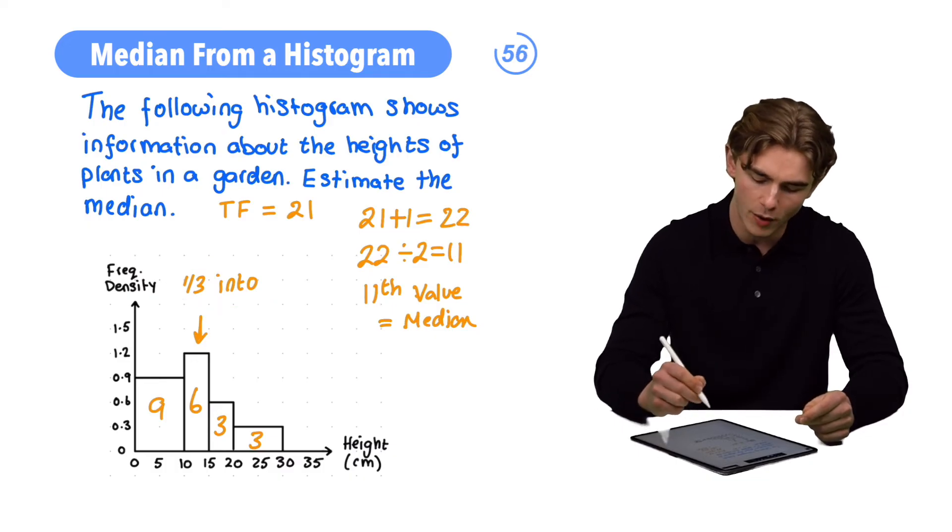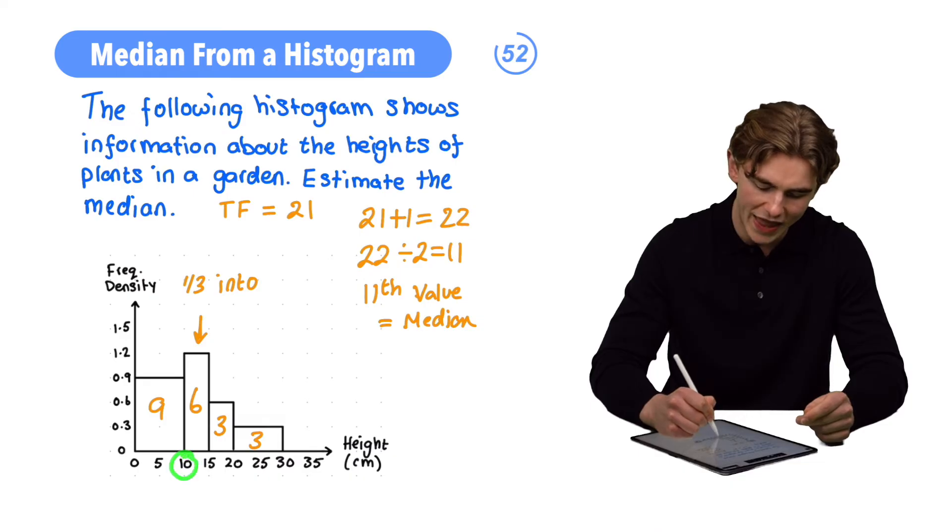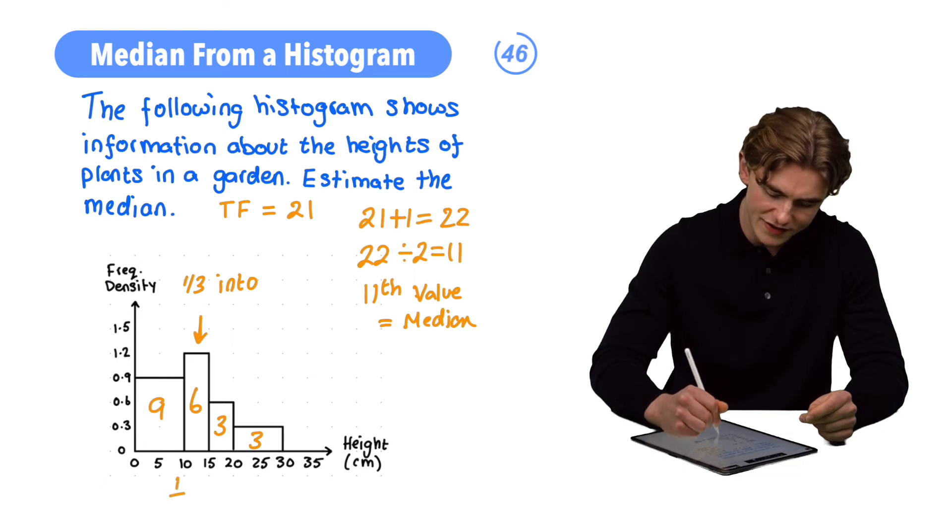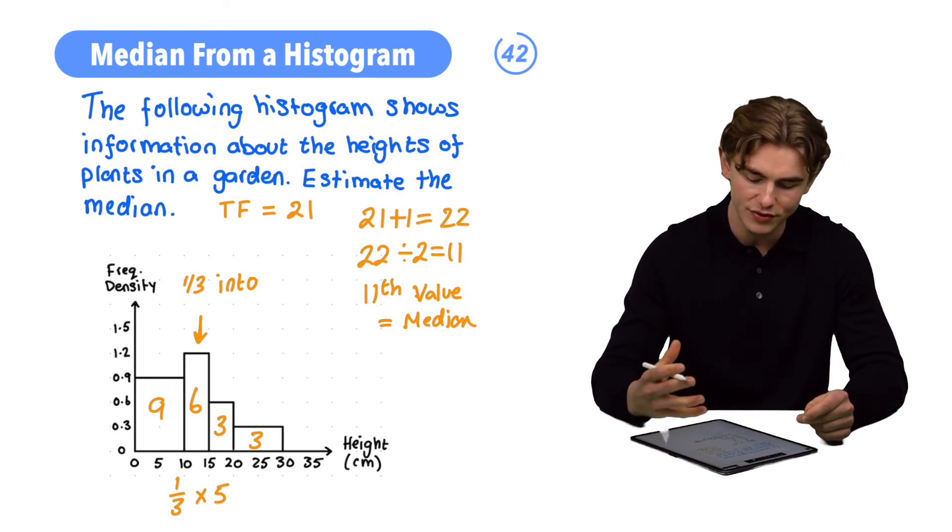So going 1/3 of the way into this bar, what height is that going to take us to? We essentially start at 10 and end at 15 in that bar. We need to go 1/3 of the way into that bar. So we can do 1/3 times 5, that is going to represent how far into that bar we go.